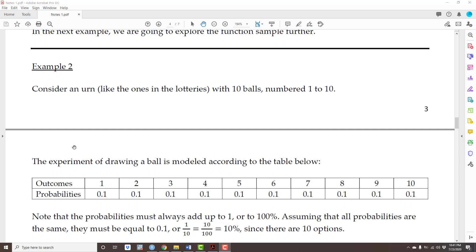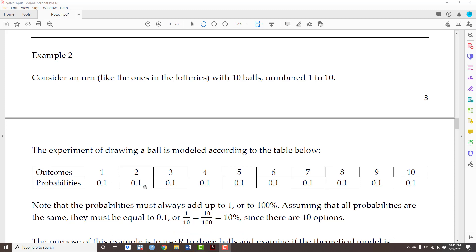How are we going to model this experiment? Remember, to define a model, all you have to do is list the table with the outcomes and the probabilities. So the outcomes are 1, 2, 3, 4, 5, 6, 7, 8, 9, 10, and the probabilities are 0.1.